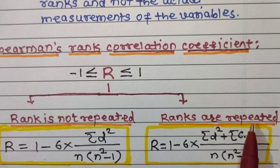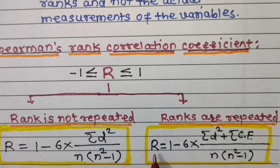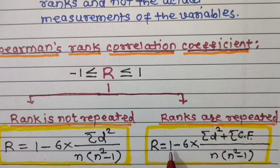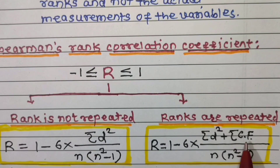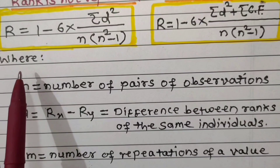And if ranks are repeated, or values of the variable are repeated, then Spearman's rank correlation coefficient is given by: R = 1 minus 6 times (summation of d² plus sum of all correction factors) divided by n(n² − 1).